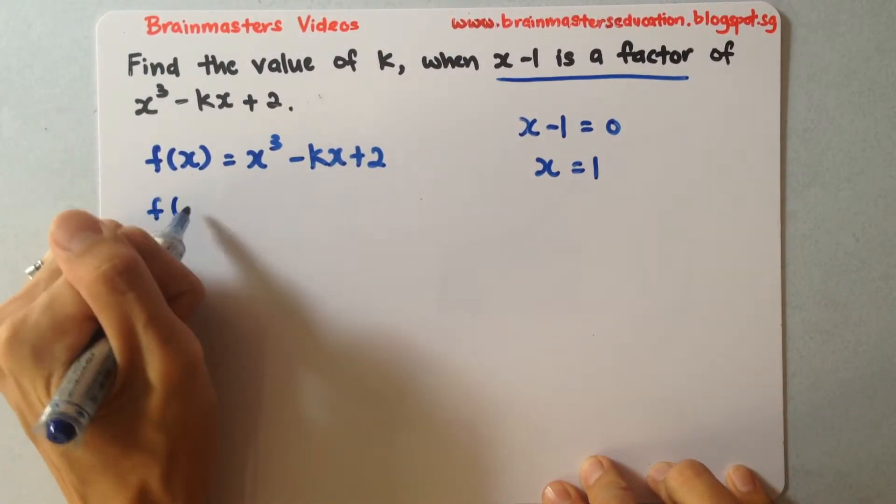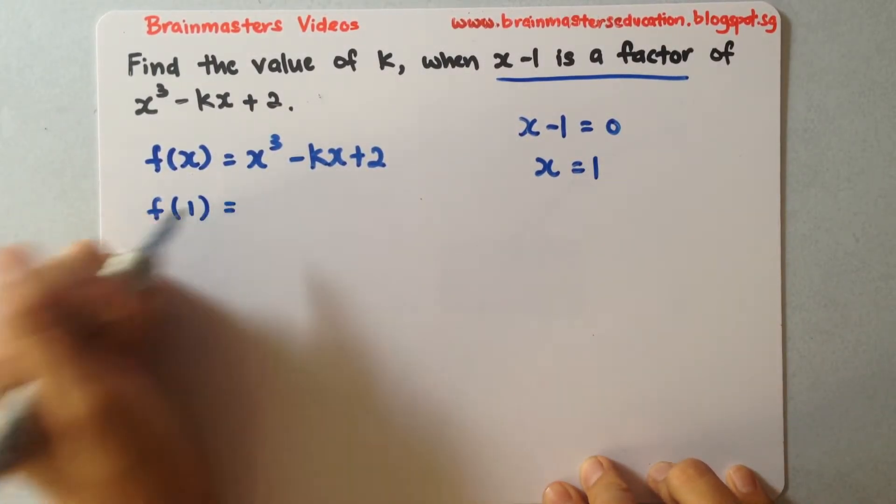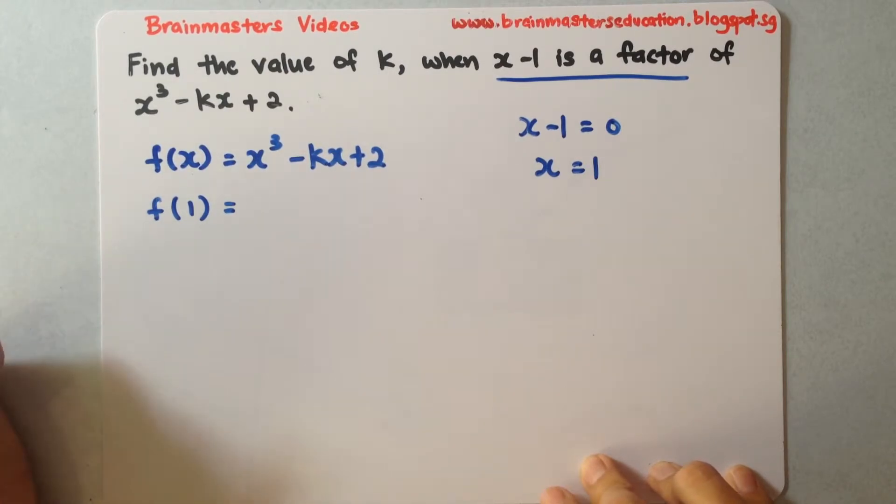It tells me that when I substitute by x equals to 1, the remainder must be 0. So this is how you present your working.